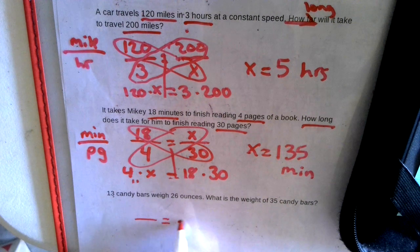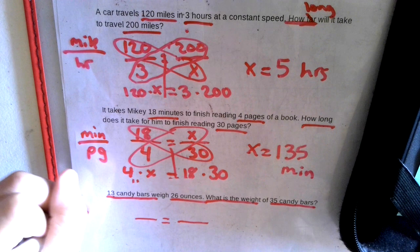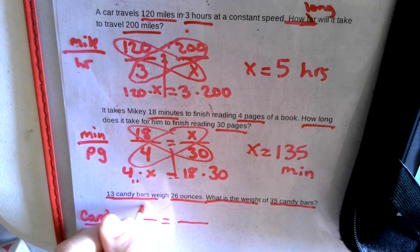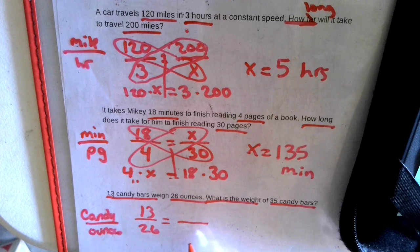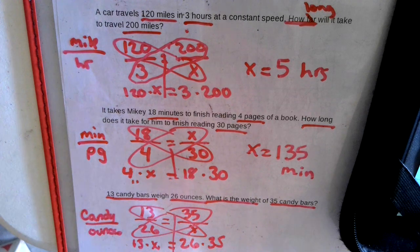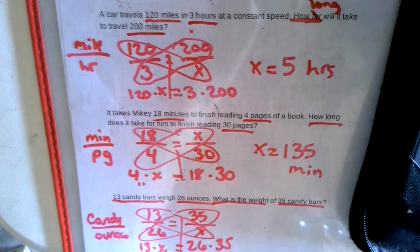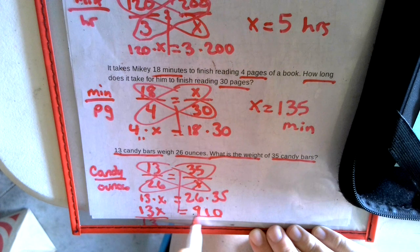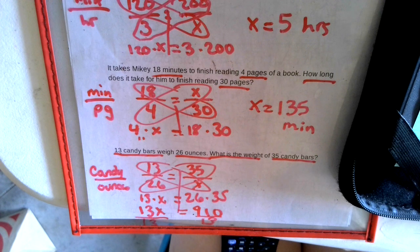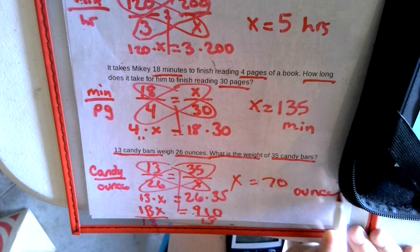13 candy bars weigh 26 ounces. What is the weight of 35 candy bars? So we're going to go candy to ounces — we have 13 to 26. We want to know the weight, so we don't know the ounces but we know the candy bars. 13 times X equals 26 times 35. We do the math: 26 times 35 will be 910. Number and letter shoved together, and we're going to divide by 13. So 910 divided by 13 is 70. So 70 equals X, and that would be ounces because we're looking for the weight.